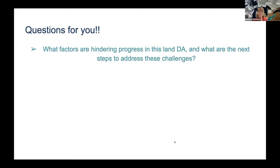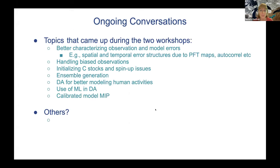In this final half hour or so, we have some questions for the community that we started talking about in the last workshop, and we're going to interweave our thoughts and prompts for you as well. Our first question — broadly what we've been talking about throughout the whole workshop — is: what factors are hindering progress in land data assimilation, and what are the next steps to address these challenges?